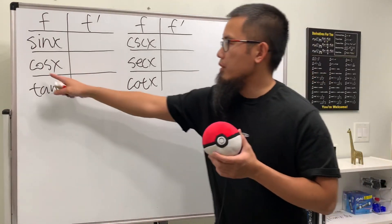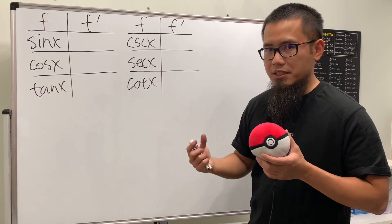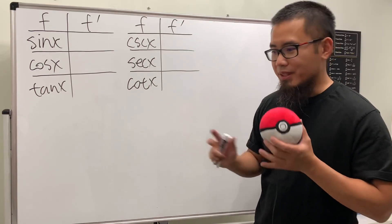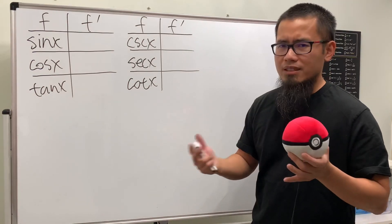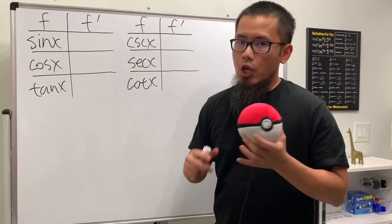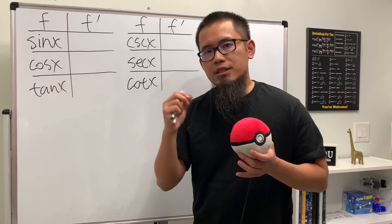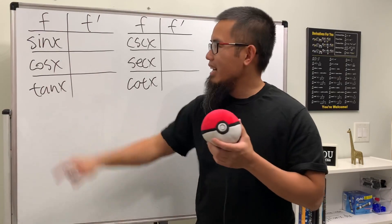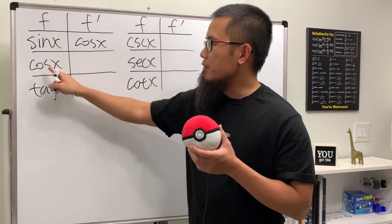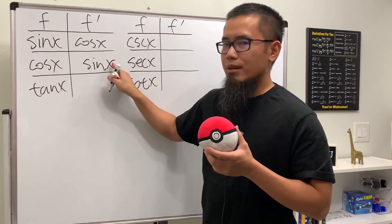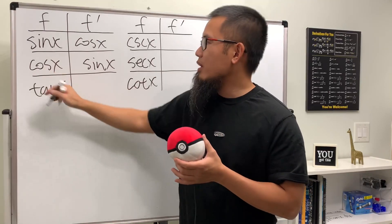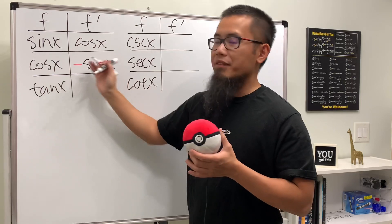Notice that we have 3 co-functions — they all start with a 'c' — and they all have negative derivatives. That's how you remember which ones are negative. Now, sine and cosine are best friends in calculus. The derivative of sine x is cosine x, and the derivative of cosine x is sine x. But remember, co-functions have negative derivatives, so the derivative of cosine x is negative sine x.